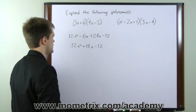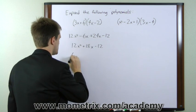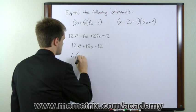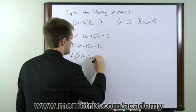Now each of these numbers is a multiple of 6, so we can pull a 6 outside of this expression. And that gives us 2x squared plus 3x minus 2.